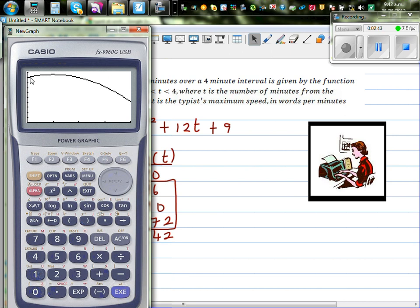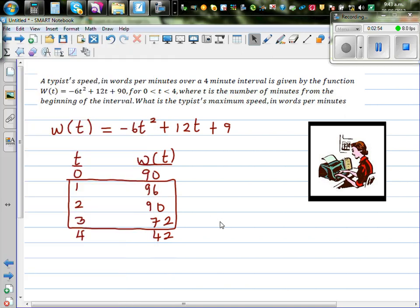So you start at 90 and you increase your speed. And you reach the maximum. So let's go G-solve maximum. So after one minute you reach the maximum. You already got that in the table. Let's use calculus now. This is your answer. We already know the answer. So now let's use calculus.